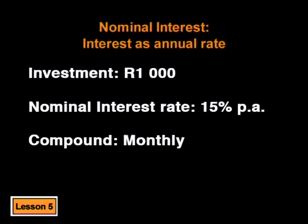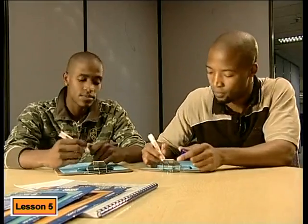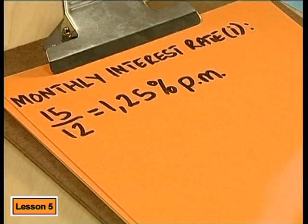That sounds good — my money is being added to me every month. Nominal interest is the interest as an annual rate, so if the interest is worked out annually, this would be the nominal interest rate. If we calculate monthly interest, how does the annual interest help us? The bank doesn't give you the monthly rate, but we can work it out. How many times would we calculate interest each year? Twelve times — because there are 12 months in a year. To get the monthly rate, we divide the annual rate by 12, so the rate each month is 1.25%.